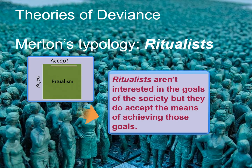Ritualists aren't interested in the goals of society, but they do accept the means of achieving those goals. They don't seem to think about the big picture and instead live their lives day to day, paycheck to paycheck. They go to work, have a steady job, but probably live in an apartment or maybe a family member's basement. They don't talk about career moves or retirement and simply keep doing their routines every day. You may not be able to think of popular examples, but if you think of characters in a movie or TV show who fit this typology, you'll start to recognize people falling into the ritualist category.